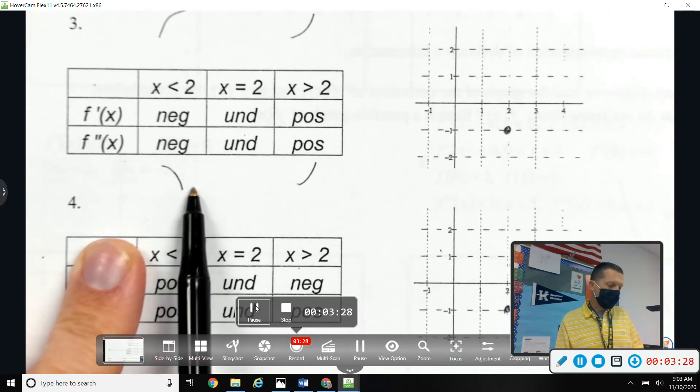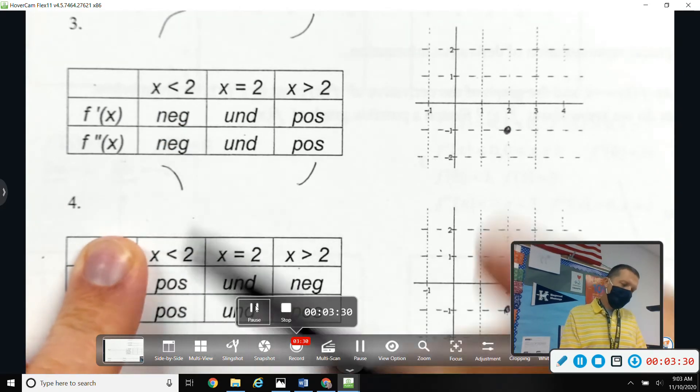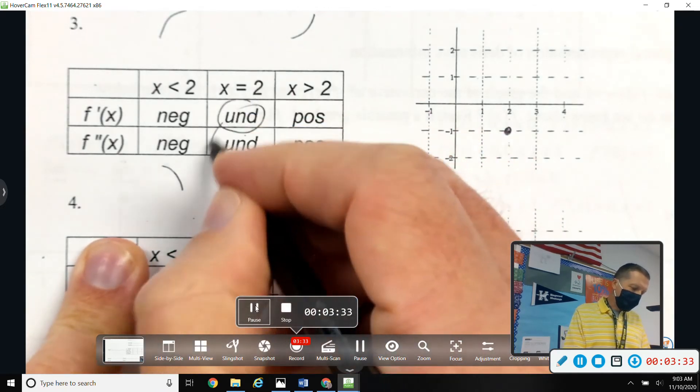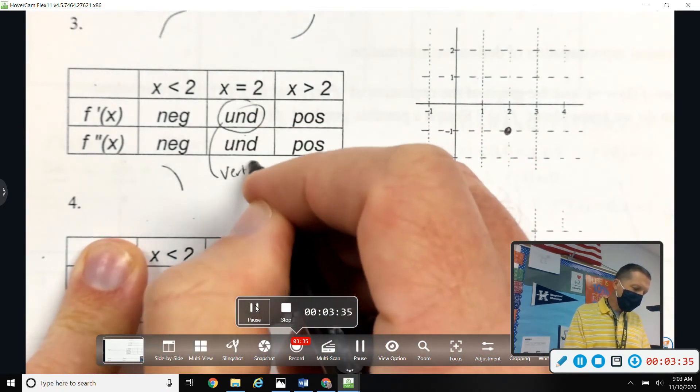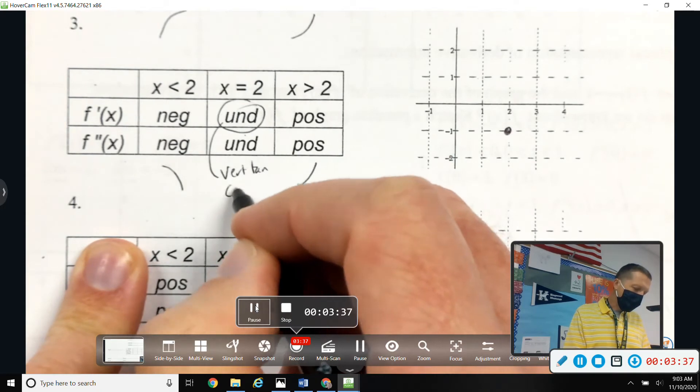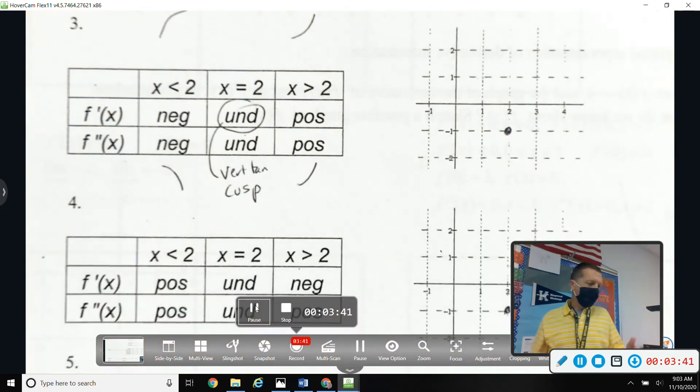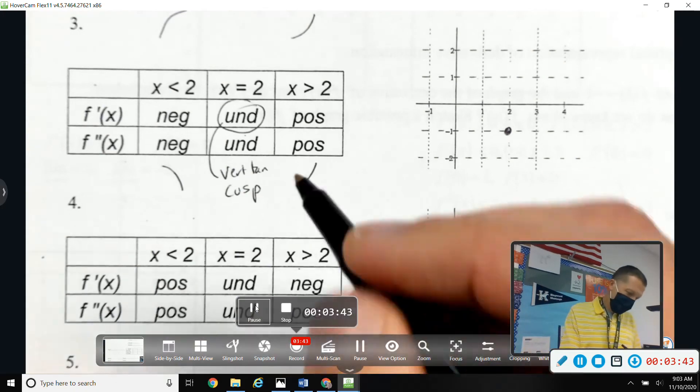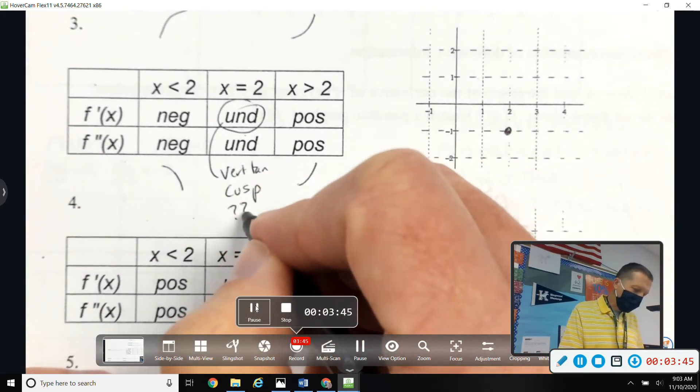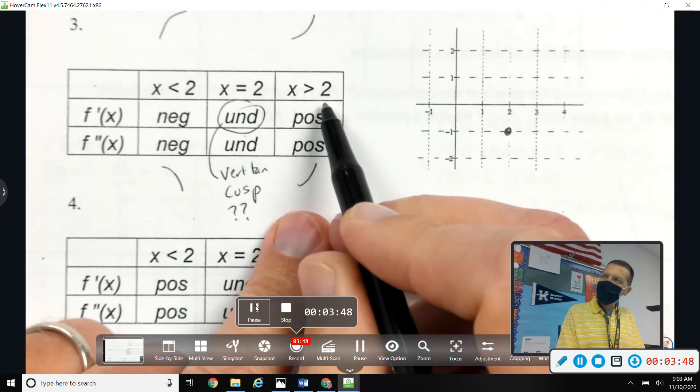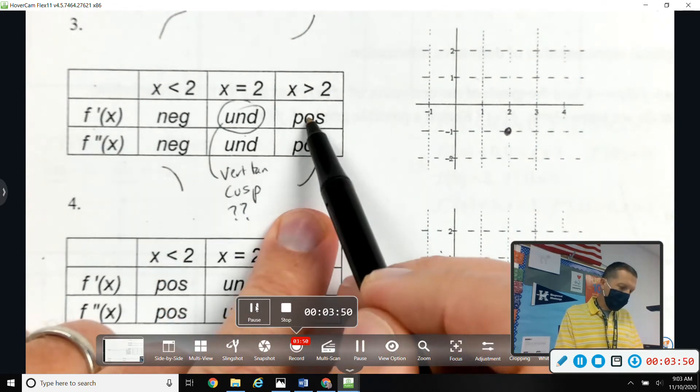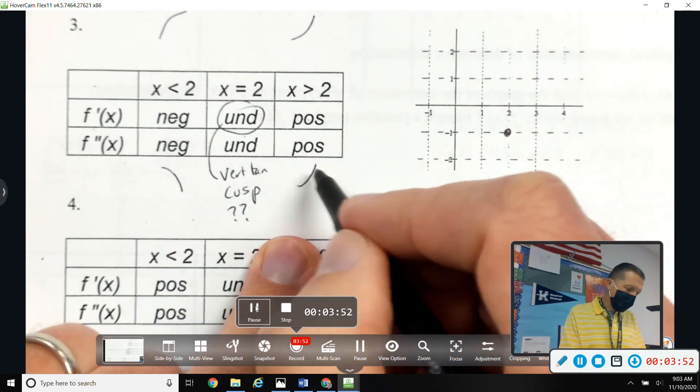So I can draw that little piece. Undefined - that's a little iffy. That could be a vertical tangent line, that could be a cusp. In general, it could be an asymptote, but we already know that doesn't happen on these. So something is happening there. Greater than 2, f prime positive, so we're increasing.